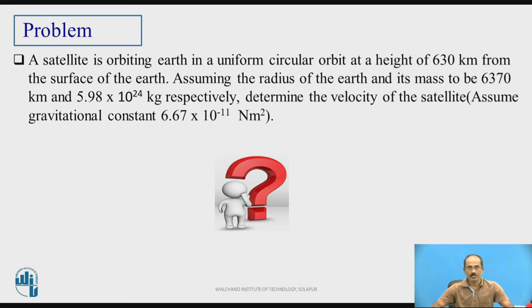Let us see one problem. A satellite is orbiting earth in a uniform circular orbit at a height of 630 km from the surface of the earth. Assuming the radius of the earth and its mass to be 6370 km and 5.98 × 10²⁴ kg respectively, determine the velocity of the satellite. Pause the video and try to solve this problem.